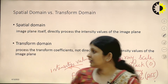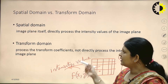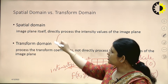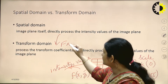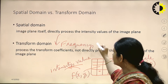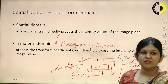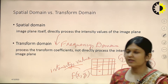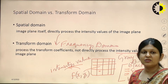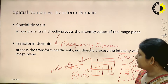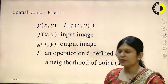Next is the transform domain. The transform domain processes the transform coefficients — we convert the spatial domain to some other domain such as the frequency domain and work on the frequency components. So directly we are not working on the intensity values or the image itself; we are working in some other plane. In today's lecture we will look at the spatial domain process.